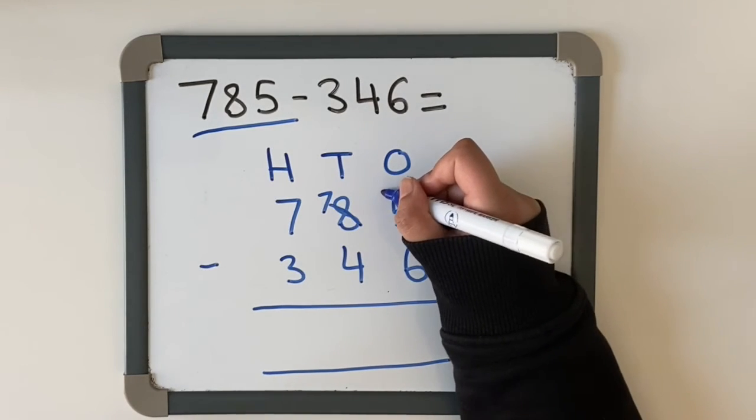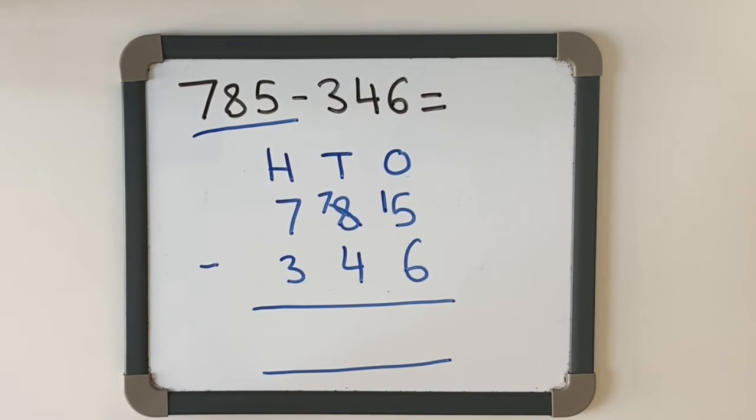Which is going to be 15. Now 15 take away 6 is: 15, 14, 13, 12, 11, 10, 9.